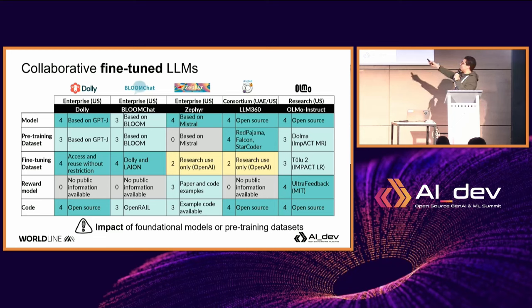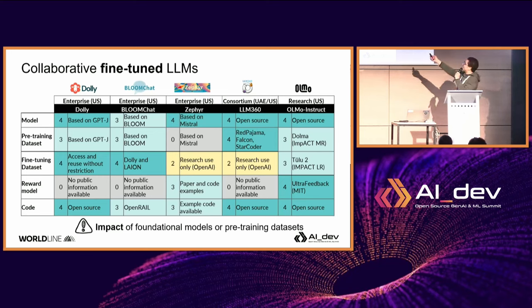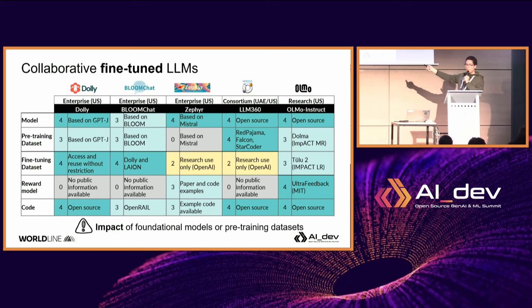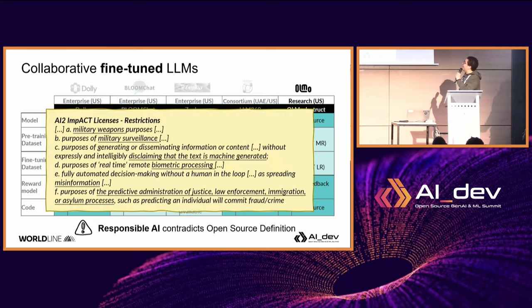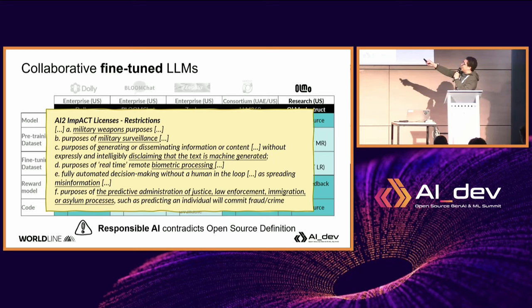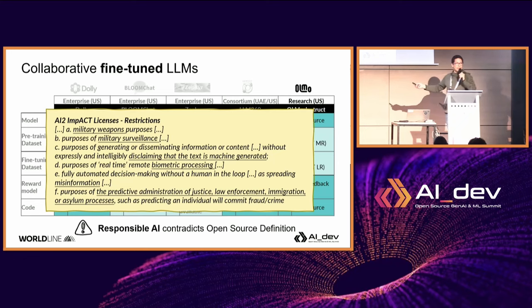With OLMo, the only impact is on the dataset. They created the pre-training dataset called Dolma under an impact version license. For the fine-tuned dataset called Tulu, what's interesting is it's a DPO LLM — an adaptation of the LLM — and even the parameters and information used to do the adaptation are open source under MIT license. However, you still have a score of three because there are responsible AI restrictions: no surveillance, no biometric processing, don't do things we don't want you to do with them.